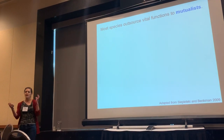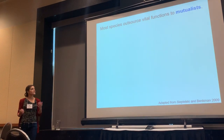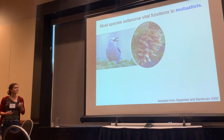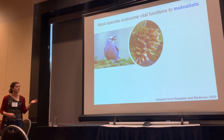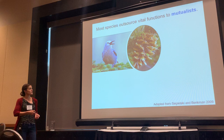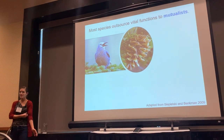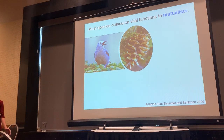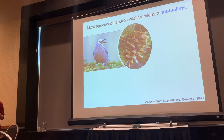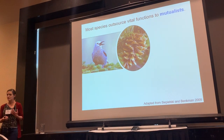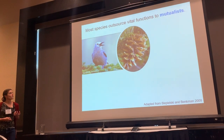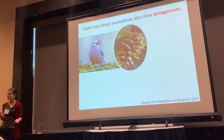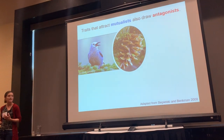To orient you to what my lab is interested in: in general, we know that most, maybe all, species outsource vital functions to mutualists. To illustrate this, I want to start with the example of the mutualism between the limber pine tree and Clark's nutcracker. Clark's nutcracker is the primary seed disperser for the limber pine tree, so limber pine reproductive success relies on successfully attracting these mutualists to disperse their seeds. But limber pines and all other species that rely on mutualists face the conundrum that attracting mutualists also attracts antagonists.